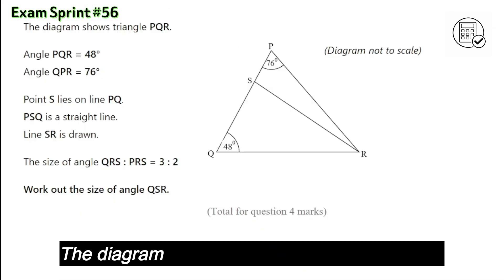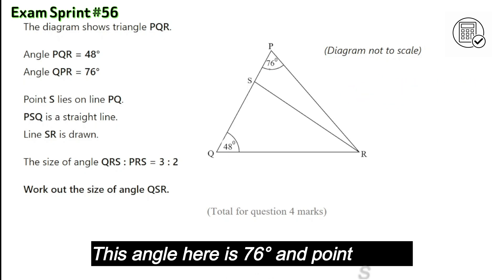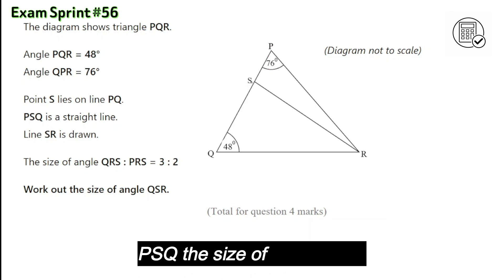Let's check the answer. The diagram shows triangle PQR and we know this angle is 48, this angle here is 76 degrees, and point S is on this straight line PSQ.